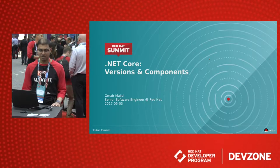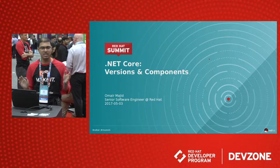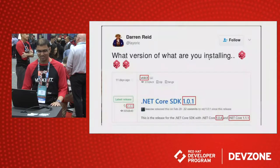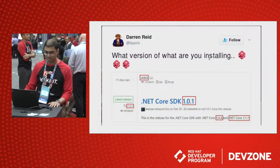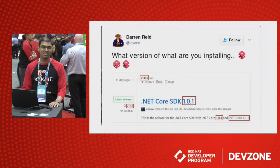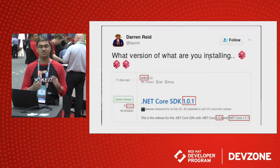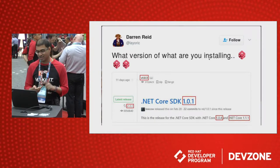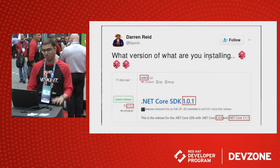I'm here to talk about .NET Core versions and components. You might think, what? Versions? Who needs to know? This is so basic. I was really motivated by this little tweet. Really — what version are you installing if it says 1.0.3, 1.0.1, 1.0.1, 1.0.4, and 1.1.1? Really, what is it?